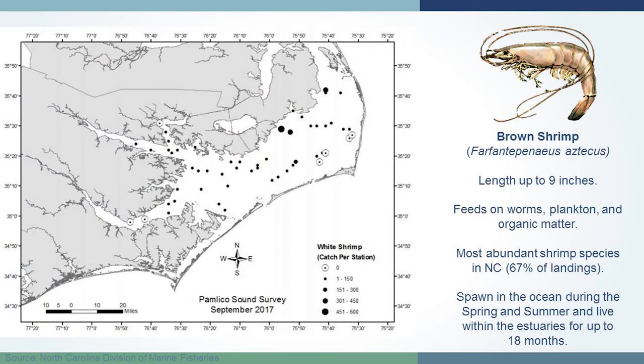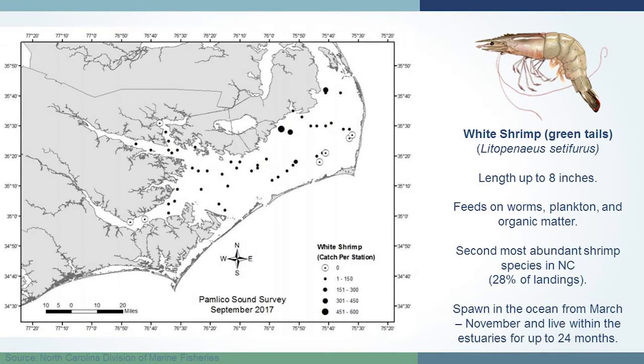I pulled some data from Division of Marine Fisheries to look at who's using these nurseries and who's eating whom as we work up the food web. Starting with shrimp — brown shrimp is the most abundant shrimp species in North Carolina, accounting for 67% of commercial landings. They feed on organic matter and worms. In the trawl survey samples done semi-annually, you'll see the larger black dots congregating in higher abundances around those nursery areas.